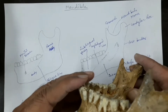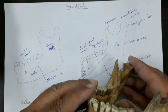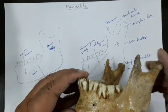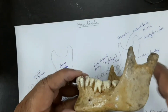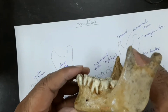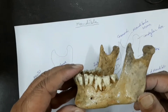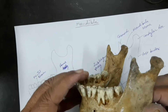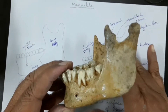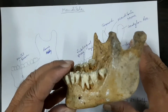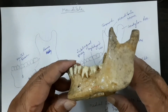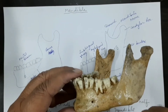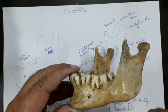Welcome back students. In this short video we will learn about the attachment of the soft tissue and relation of the nerves and vessels to the body and to the ramus of the mandible. Then I will tell you about the ossification of the mandible, and lastly the age changes in the mandible. Let us see the attachment of the muscles first.